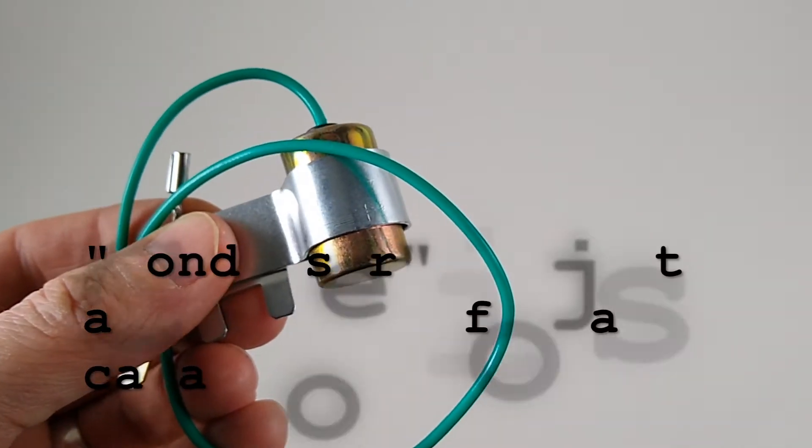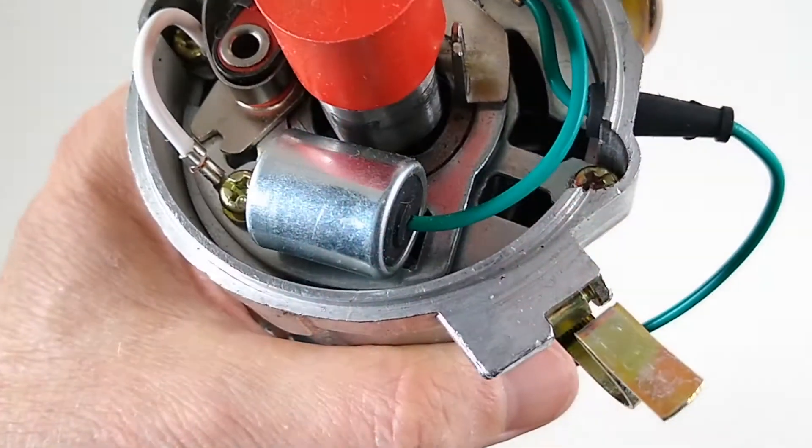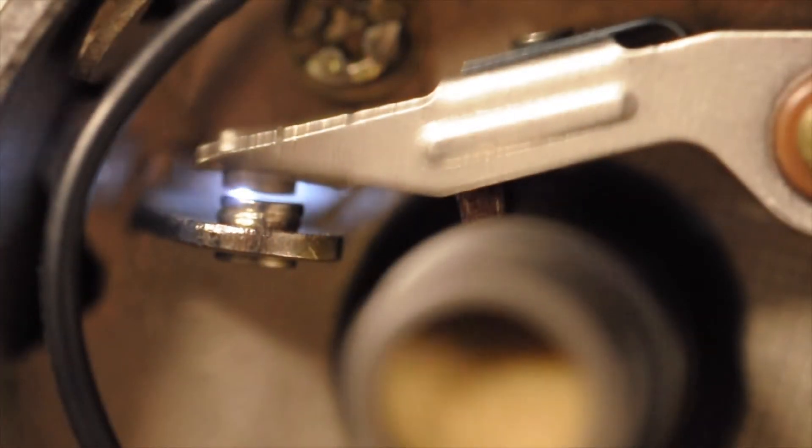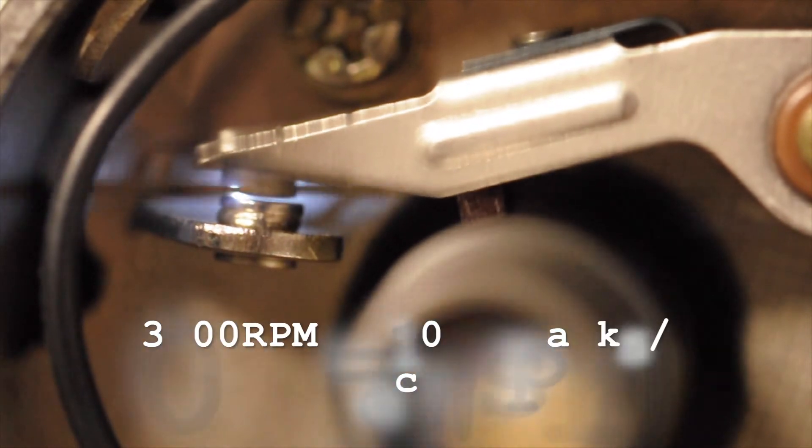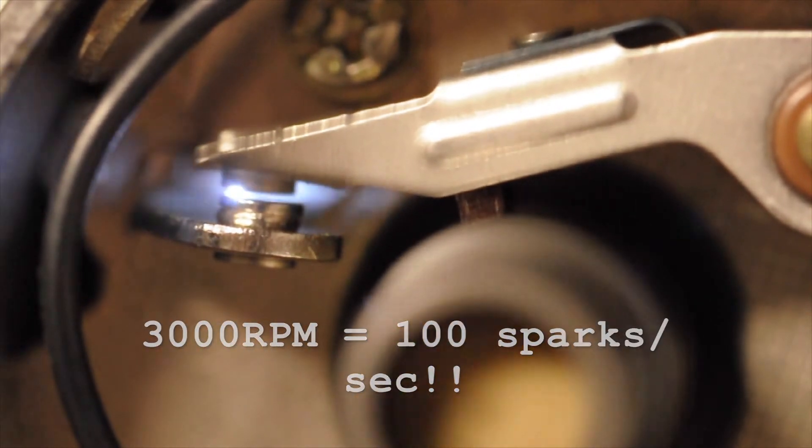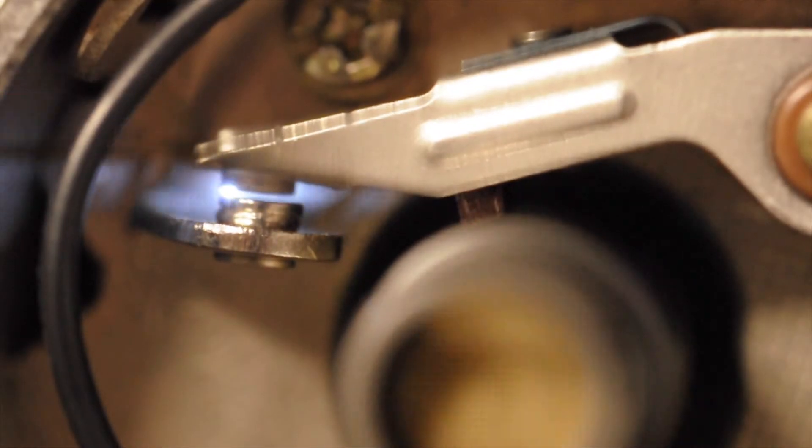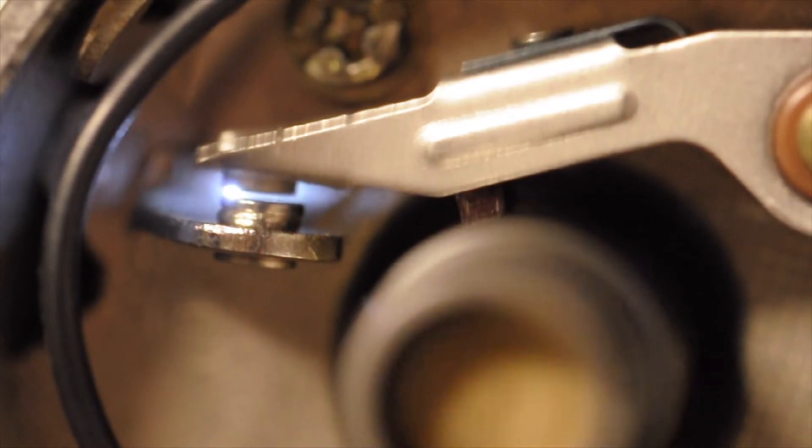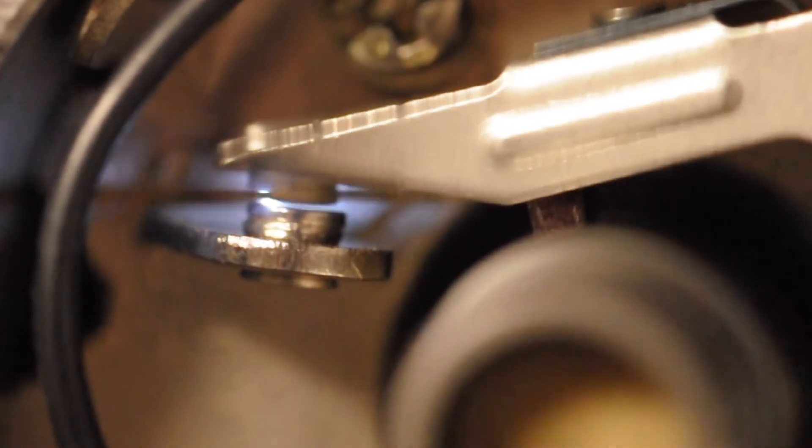The condenser reduces arcing across the contact points, helping the points to last longer. At a cruising speed of 2,500 rpm with a four-cylinder engine, the points will be opening and closing more than 83 times per second or 5,000 times per minute. That could be 30 million sparks in 6,000 miles.